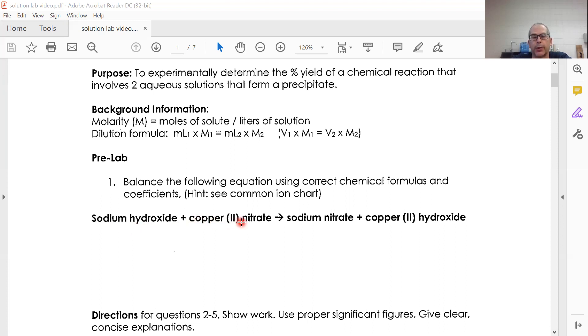You're going to do the same thing for copper 2 nitrate, the same thing for sodium nitrate, same thing for copper 2 hydroxide, and then you're going to balance the coefficients in front. So you're writing the correct balance equation for that.